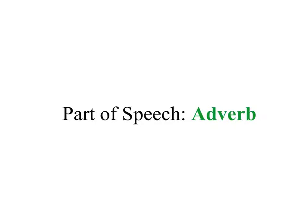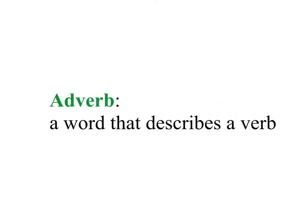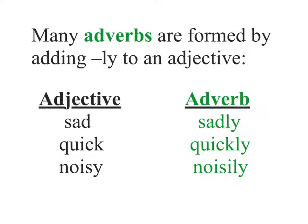The next part of speech we'll look at is the adverb. An adverb is a word that describes a verb, similar to the way an adjective is a word that describes a noun. Many adverbs are formed by adding -ly to an adjective. It's not always the case, but it's an easy way to identify an adverb. For instance, for the adjective sad, the adverb would be sadly.